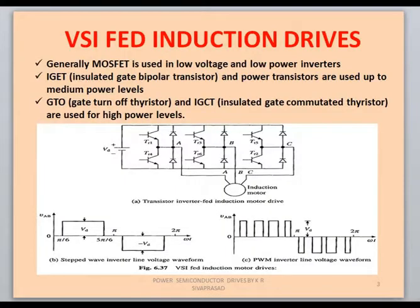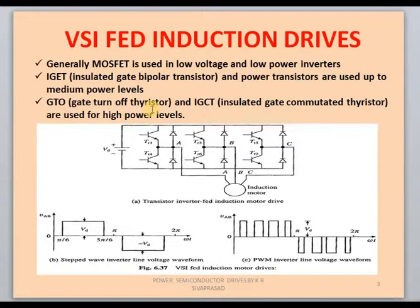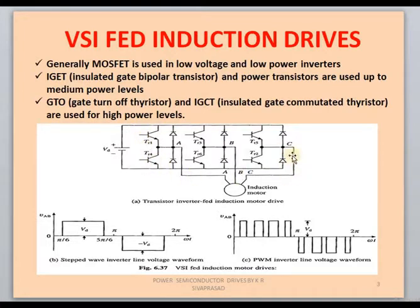We use the basic circuit diagram of the voltage source inverter. You can use different types of devices depending upon the power rating requirement. For high power rating you can use GTO or IGCT — IGCT is insulated gate commutated thyristor, and GTO is gate turn-off thyristor. For medium power applications we can use IGBT (insulated gate bipolar transistors), and power transistors. For low power applications you can use MOSFETs.